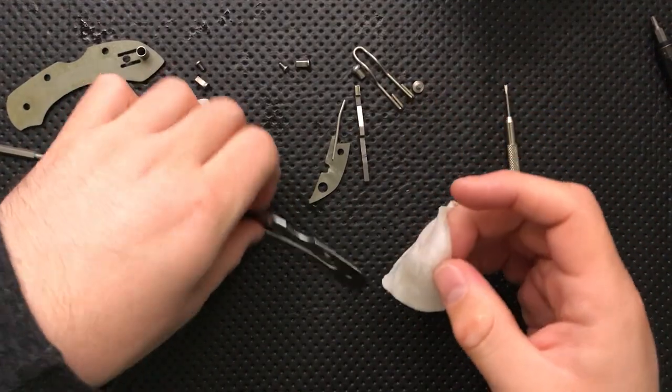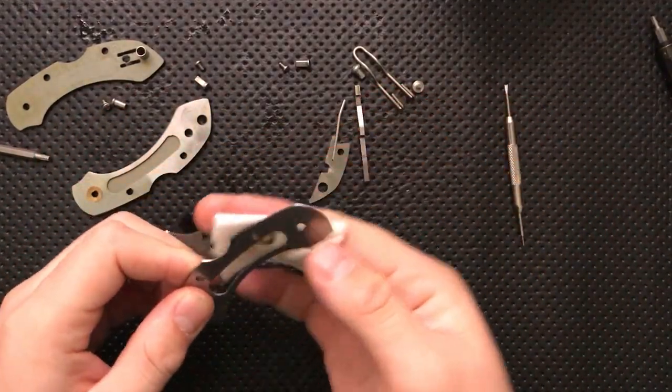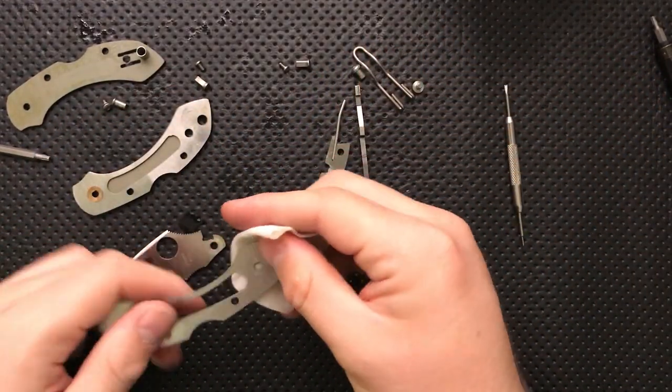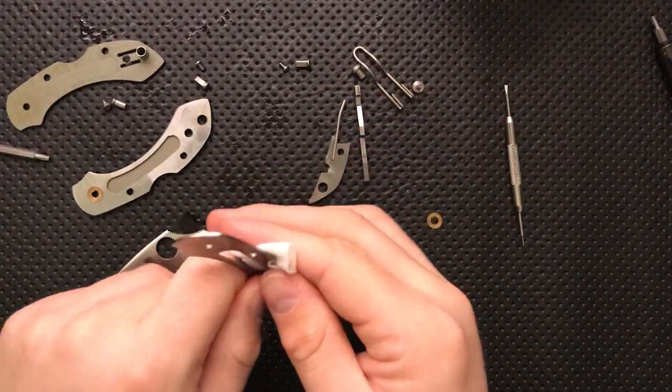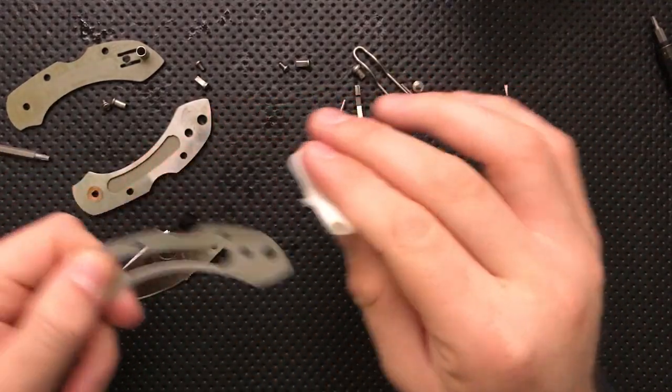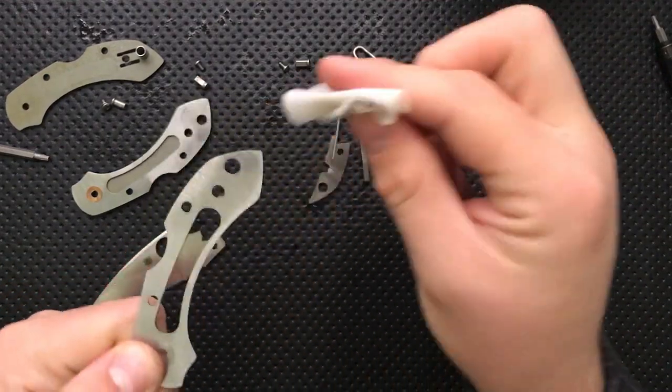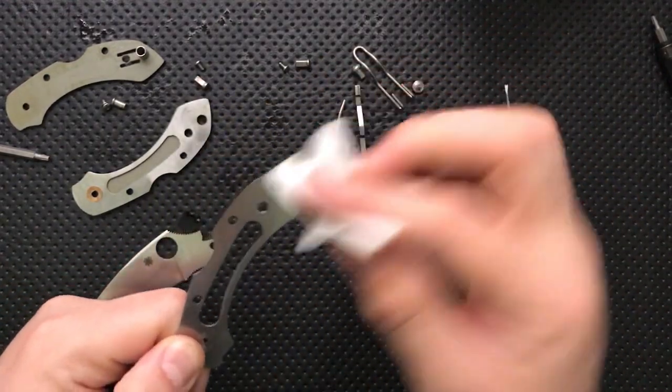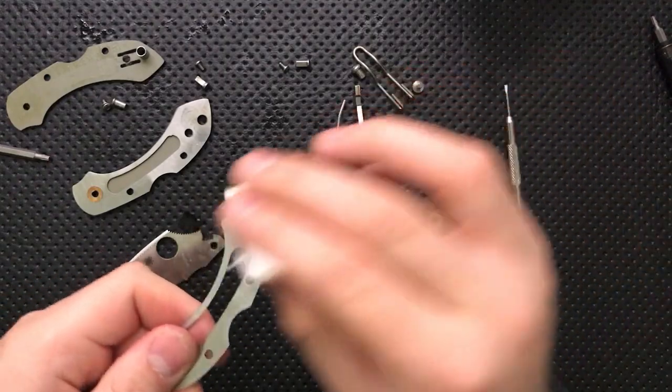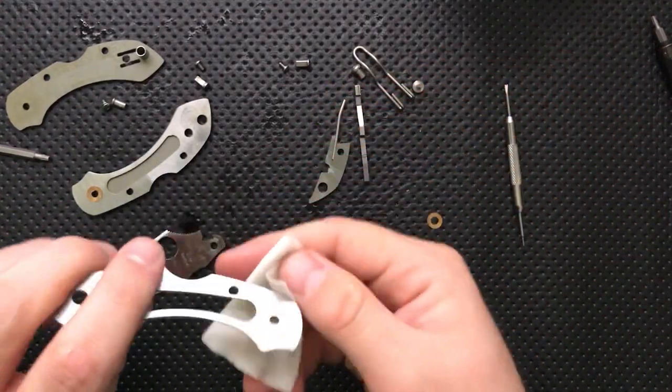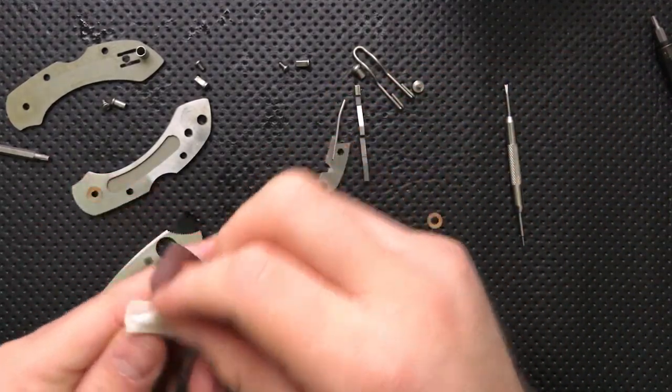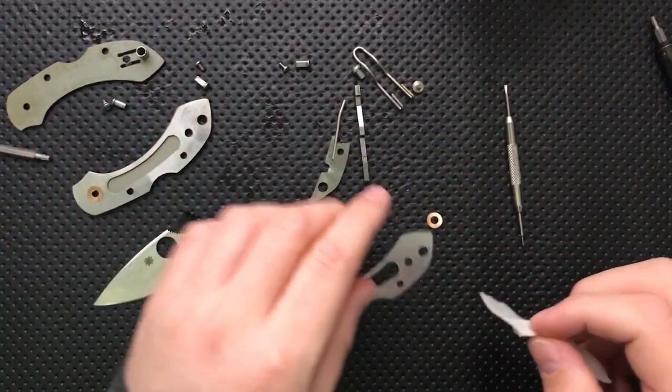And it sometimes means that knives can't be disassembled at all. The Spyderco Auroboros has a terrible case of that. Go ahead and use a little fabric swatch here, coat it in some rubbing alcohol, 91% isopropyl, and go ahead and start wiping this grease off here.